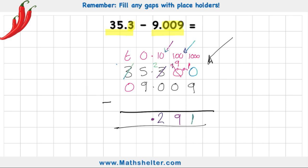Five, subtract nine, I can't do. Look next door. Fifteen, subtract nine, is six. Two, subtract zero, is two. So my answer to 35.3, subtract 9.009, is 26.291.